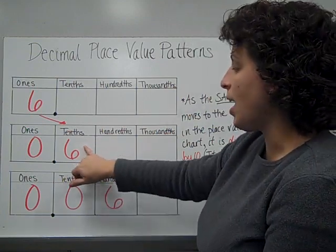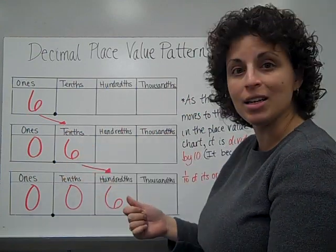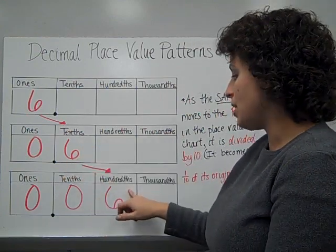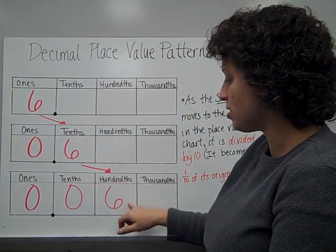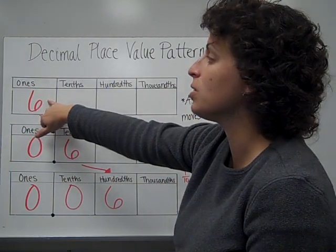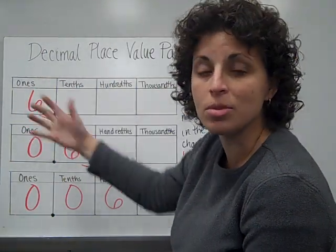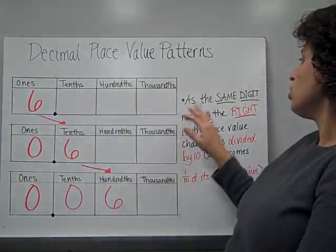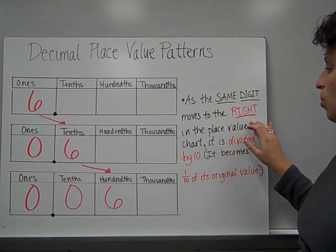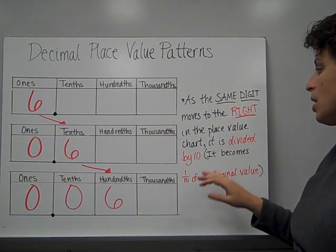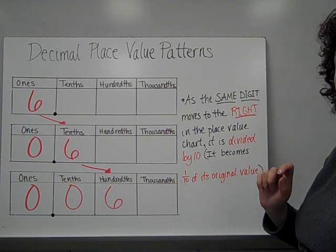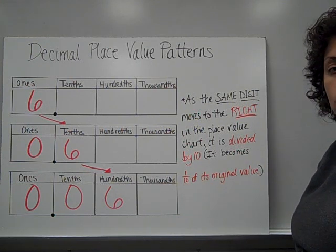If you take a tenth and you divide it into ten smaller pieces, then now you have a hundredth. This six in the hundredths place is not worth the same as six tenths, nor is it worth the same as six wholes. The rule is: as you move the same digit to the right in the place value system, it is divided by ten. It becomes one tenth of its original value.